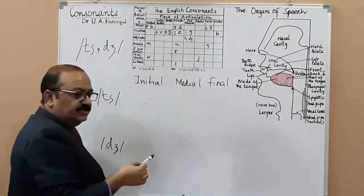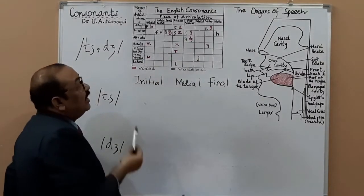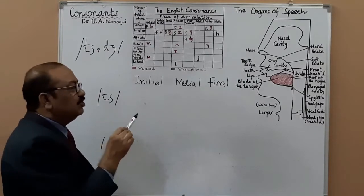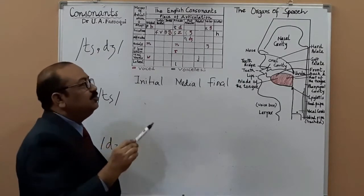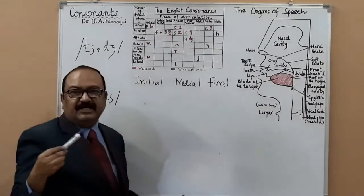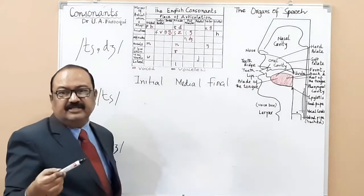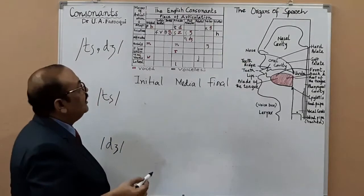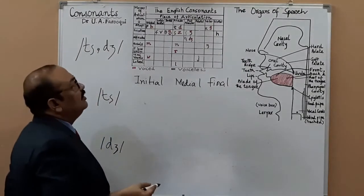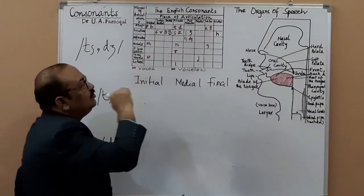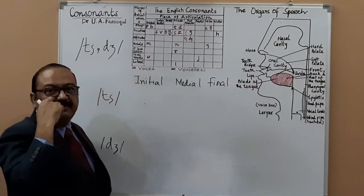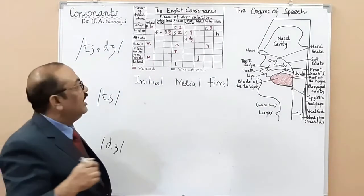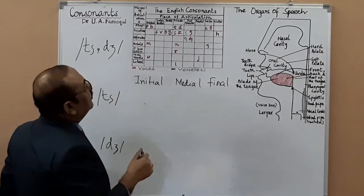Another word for post-alveolar which you find in books — so that you are not confused — is palato-alveolar. You find this term in books and on the internet, so it's better that you know it.